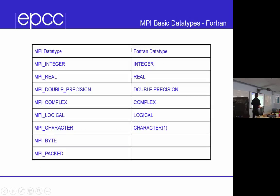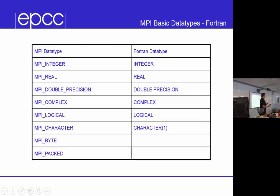Fortran is different. Fortran has integers, reals, double precisions, complexes, and logicals — because C doesn't have logicals. For MPI_CHARACTER: just don't send characters in Fortran. Unless you know the difference between a character string of length 8 and an array of 8 characters, don't send characters. They're slightly bizarre in Fortran. MPI is written as a C library, so it doesn't match up very well with Fortran characters. It's just a recipe for disaster.